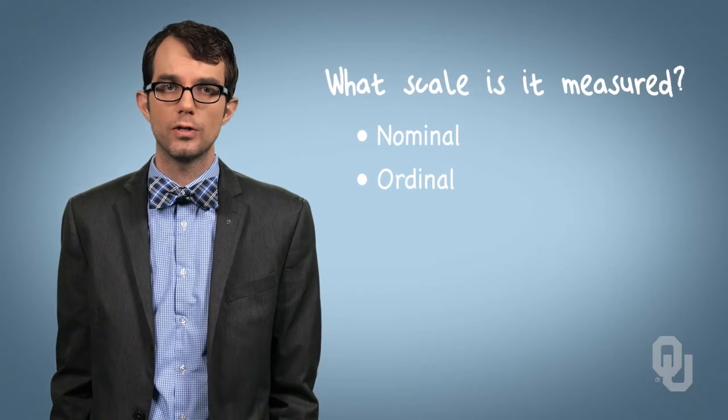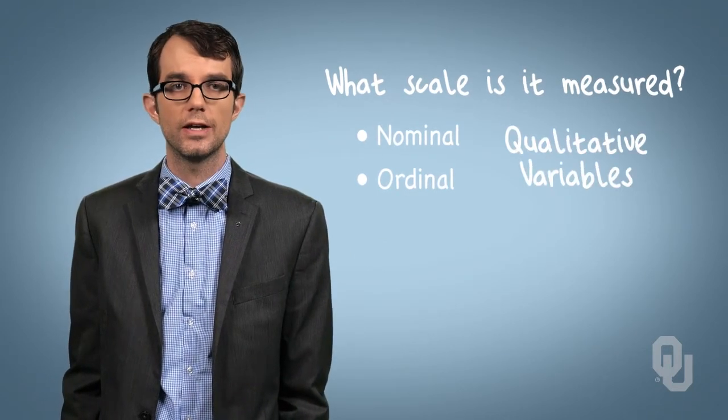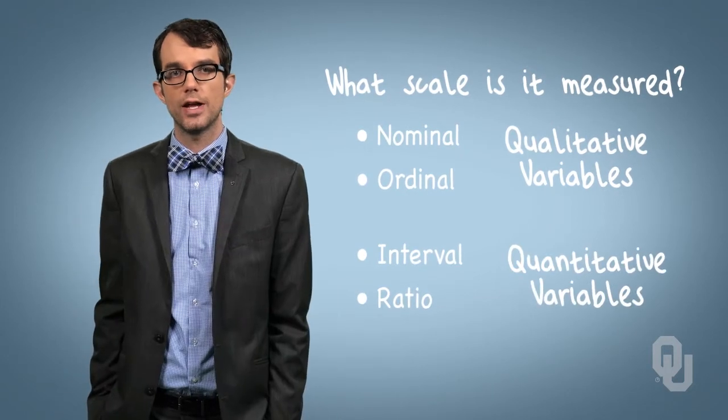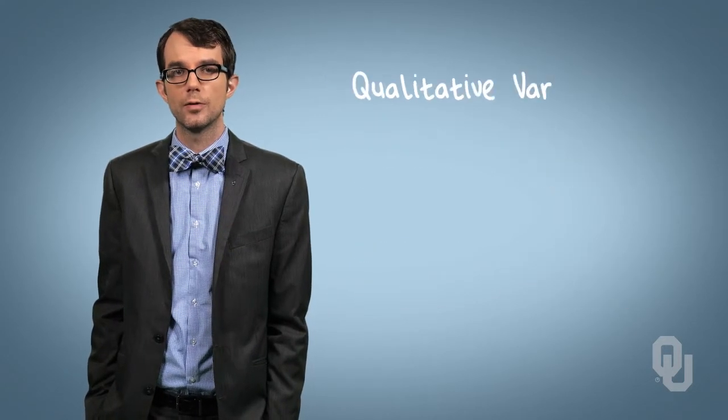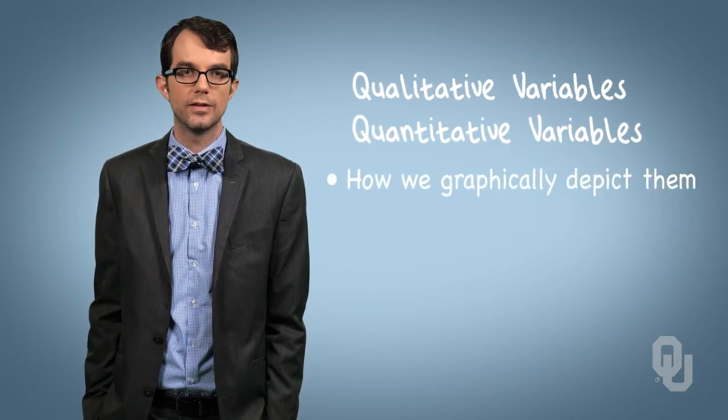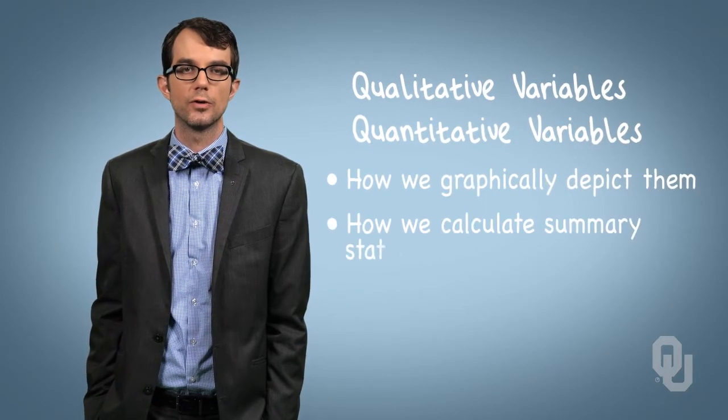Broadly, nominal and ordinal data describe qualitative variables, while interval and ratio data describe quantitative variables. By their nature, we have to treat qualitative variables differently from quantitative variables in how we graphically depict them and in how we calculate summary statistics.